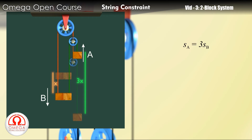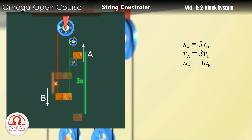Thus, the magnitude of displacement, velocity, and acceleration of the smaller block is 3 times the magnitude of displacement, velocity, and acceleration of the bigger block.